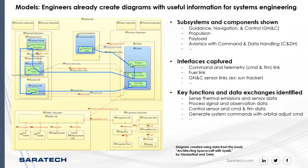Here's an example: a block diagram of a spacecraft that captures subsystems — structure, harness, communications, avionics, propulsion, guidance, navigation and control. It captures the interfaces between those systems, for example command and data handling has connections to communications, payload, and guidance, navigation and control. It also identifies key functions and data exchanges — on the payload side, a sensor senses thermal emission and a signal processor processes the signal.